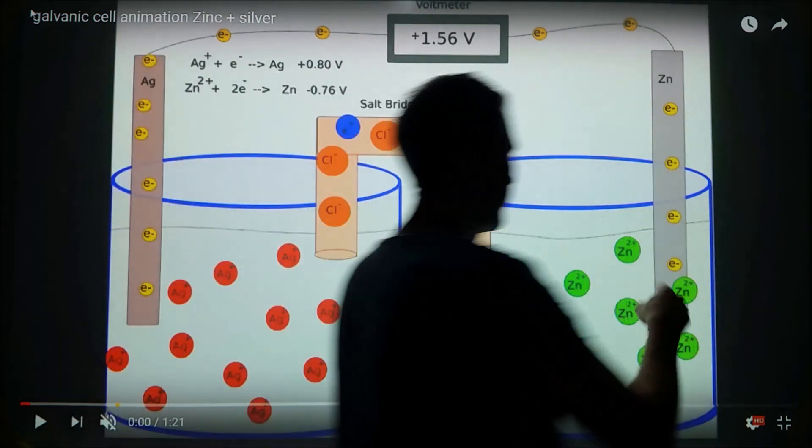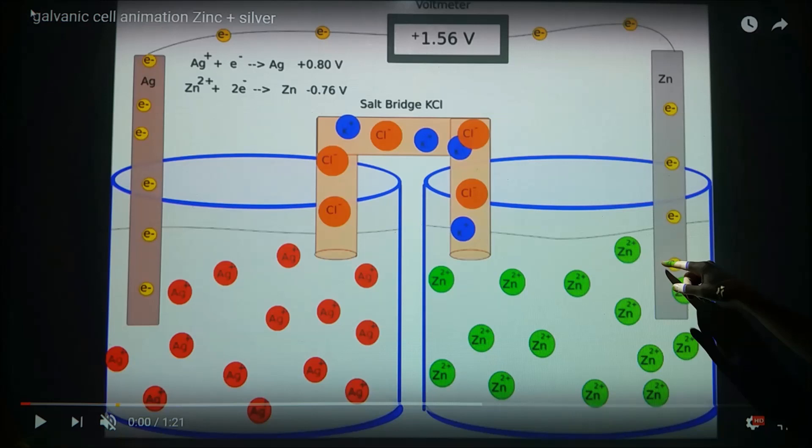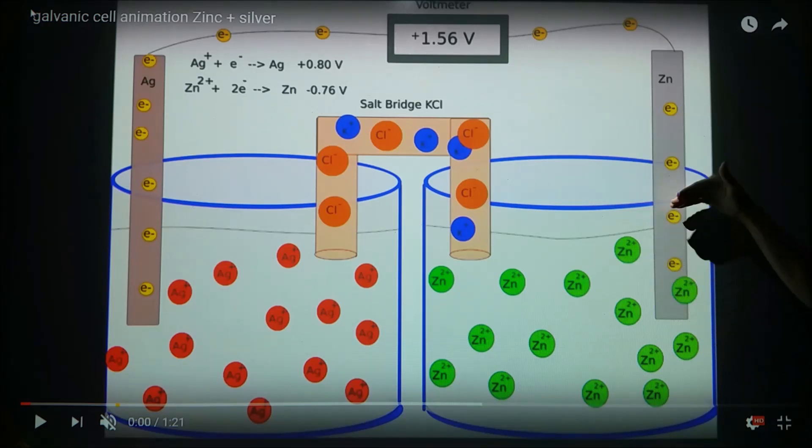When I say zinc cations, I don't mean the zinc cations here but rather the zinc atoms have two electrons apiece that are going to be removed, so I'm saying the zinc cation that's going to be left behind.